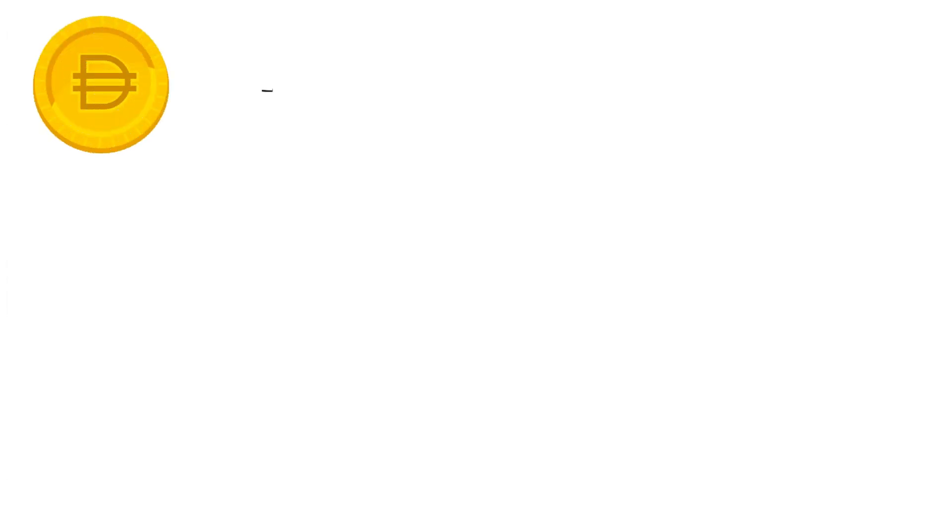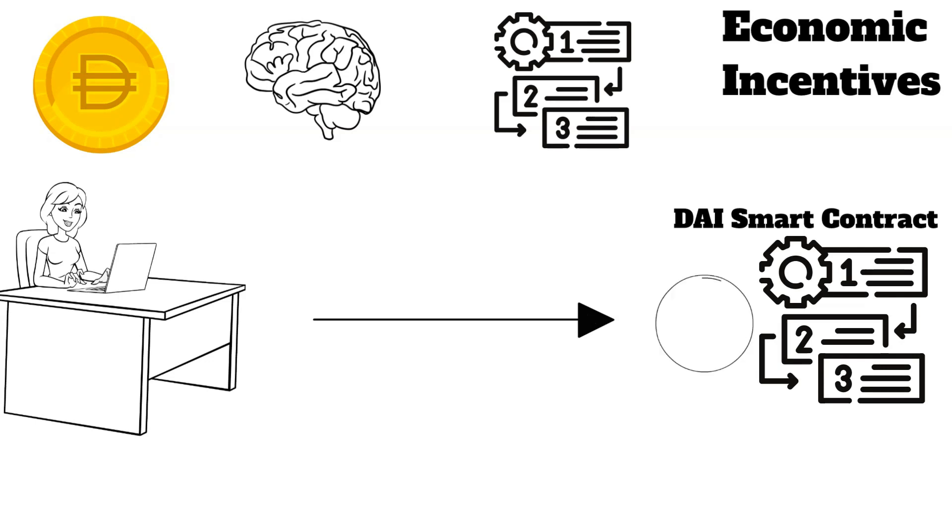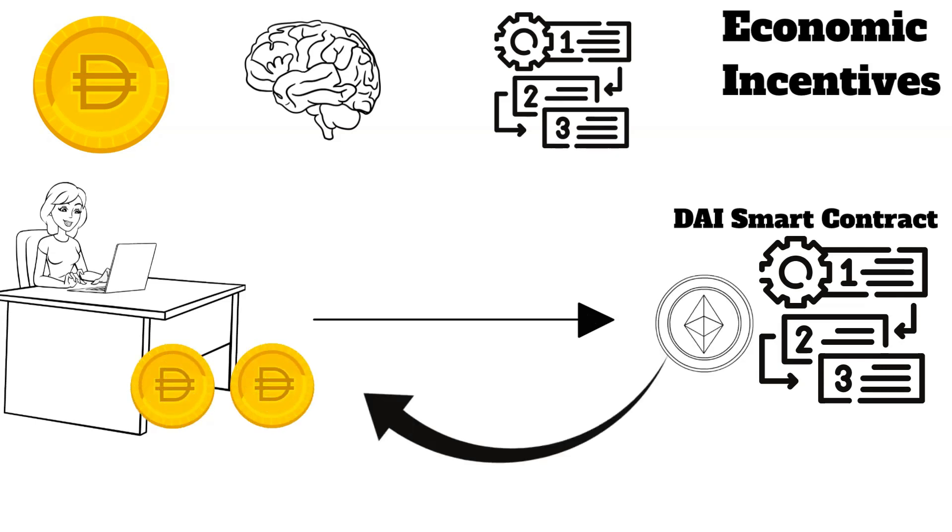How DAI maintains its stability is quite complex and works using smart contracts along with economic incentives. When a user makes a deposit, let's say ETH, into the DAI smart contract, the smart contract will automatically determine the amount of DAI that can be minted based on the amount of collateral deposited.